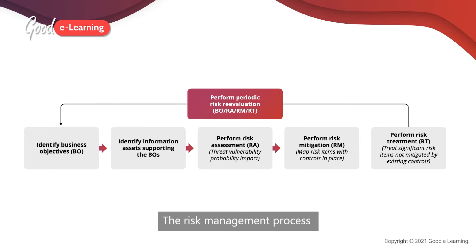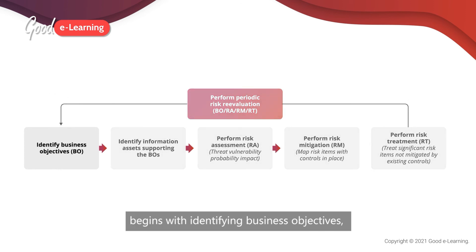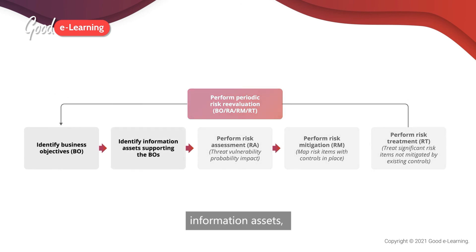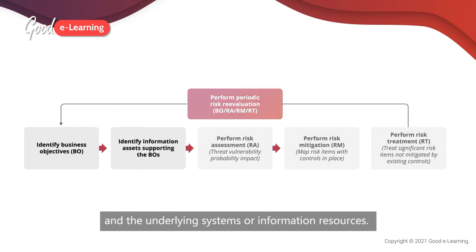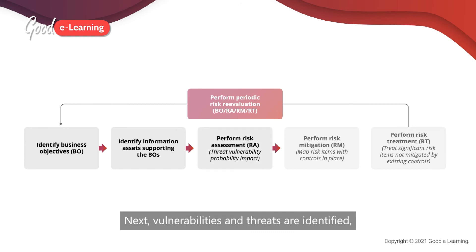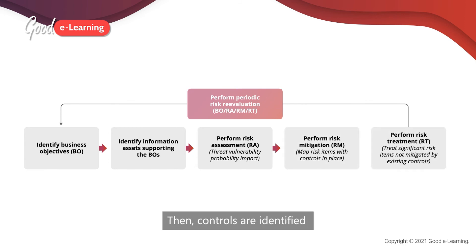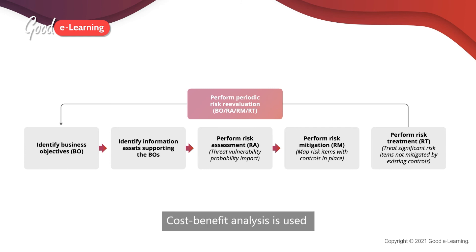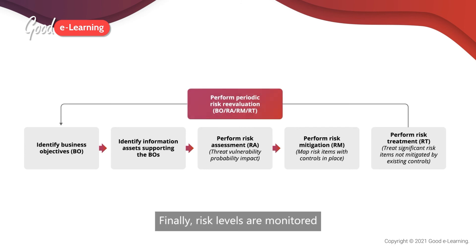The risk management process begins with identifying business objectives, information assets and the underlying systems or information resources. Next, vulnerabilities and threats are identified and the likelihood of occurrence is determined. Then, controls are identified to mitigate the risk. Cost-benefit analysis is used to determine which controls are implemented. Finally, risk levels are monitored to see if changes are warranted.